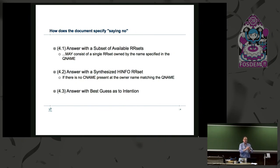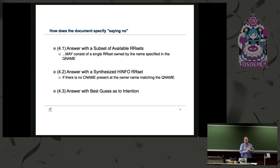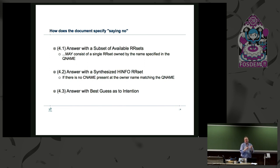There are three different things that could happen instead of sending back everything you have about the name when asked for ANY. First, you can send back a subset — just pick something and send it back, minimized. Second, come back with a synthesized HINFO record, which in the previous talk Leo mentioned was revived by Cloudflare's effort — they brought that back to life to say this is a minimized ANY query. The third option was to try to guess what the querier wanted. But if you've ever written DNS code, you realize DNS doesn't give you much information beyond 'here's what I'm asking' — it doesn't tell you why. So it's really hard to write code that can guess.